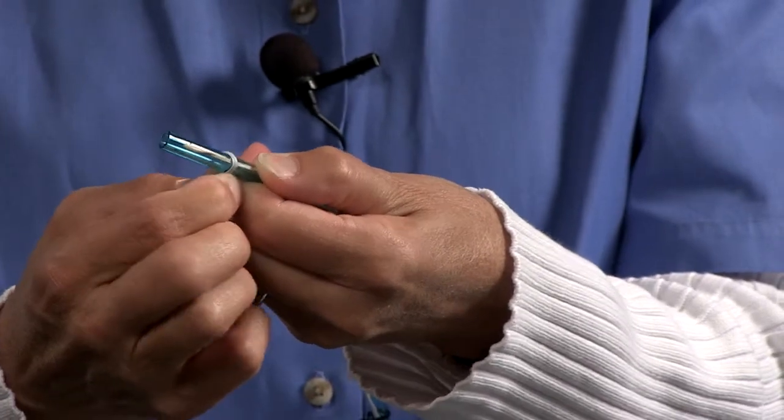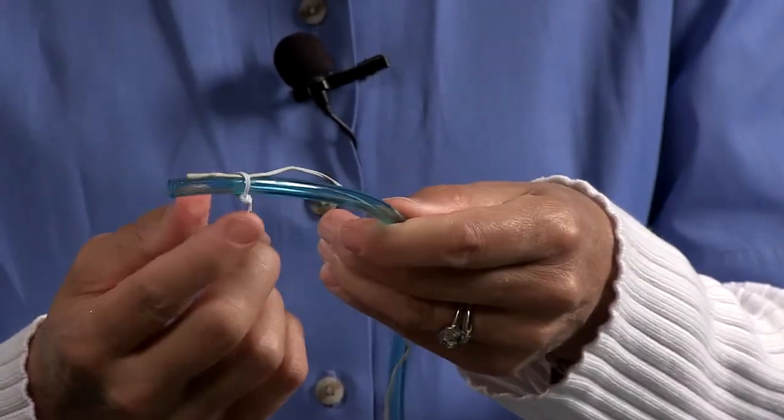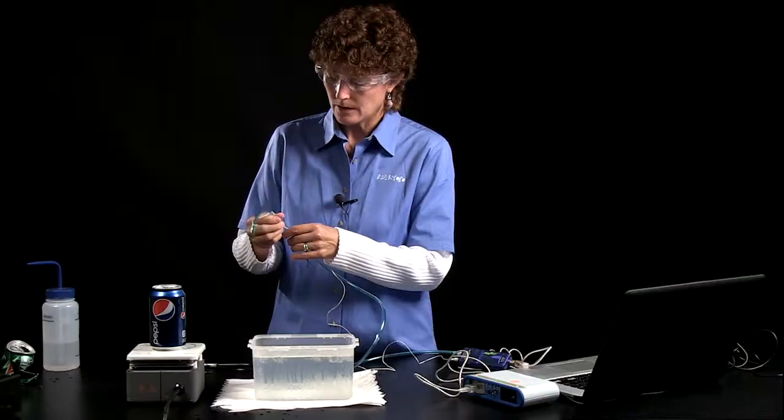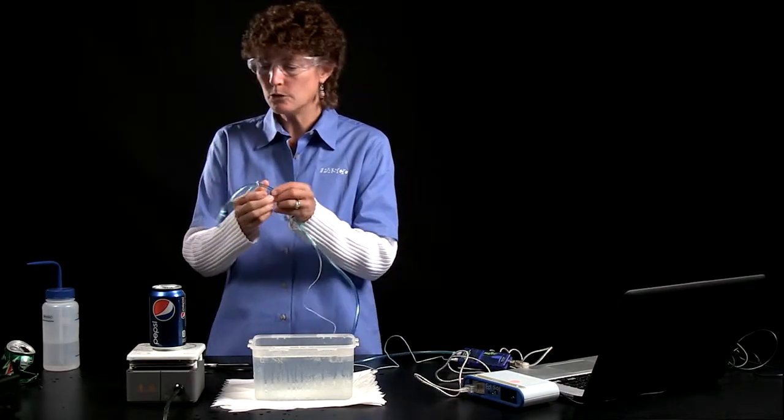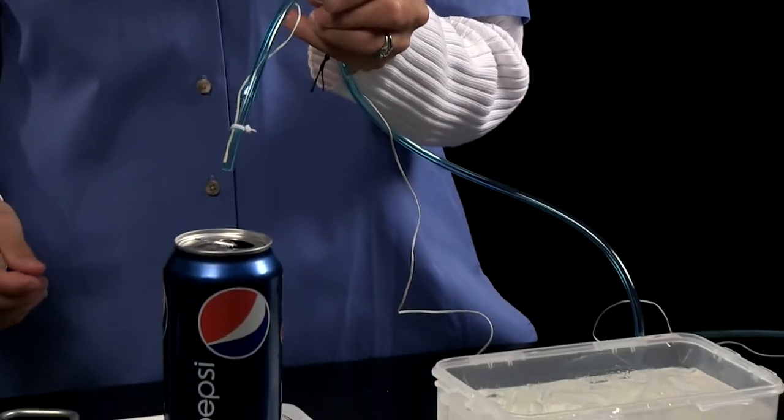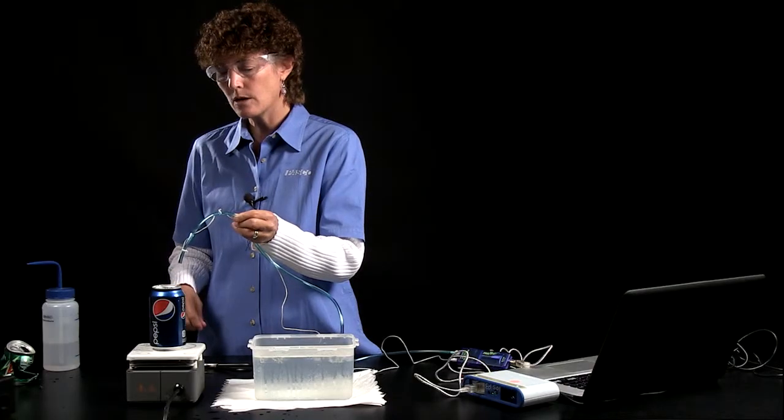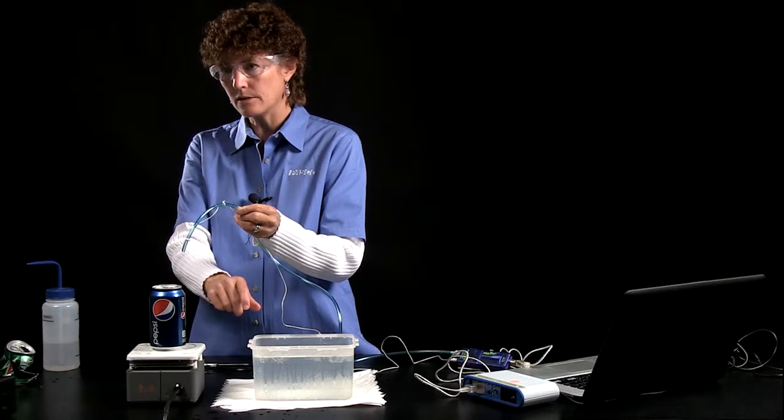Now I've connected it just by twisting around these little twist ties, the kind you get on bread wrappers, and that keeps it connected to the end of the tubing. What I'm going to do is introduce it down into the can, just before I put the can upside down into the water.